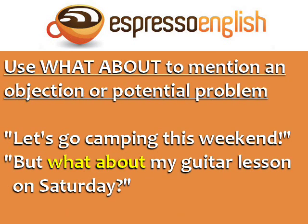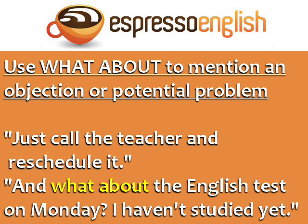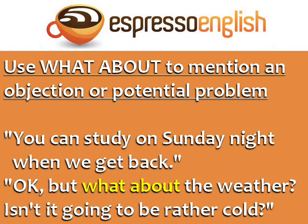Use 'what about' to mention an objection or potential problem. Here's another example dialogue: 'Let's go camping this weekend.' 'But what about my guitar lesson on Saturday?' 'Just call the teacher and reschedule it.' 'And what about the English test on Monday? I haven't studied yet.' 'You can study on Sunday night when we get back.' 'Okay, but what about the weather? Isn't it going to be rather cold?'